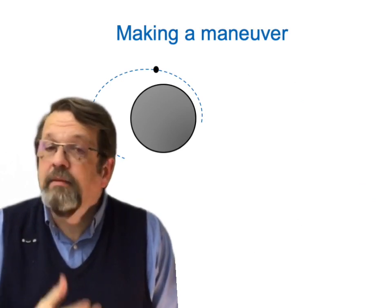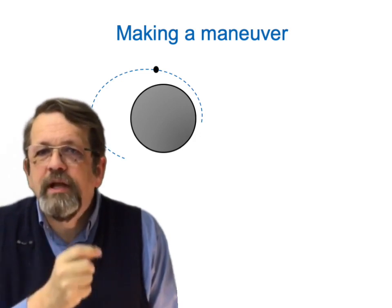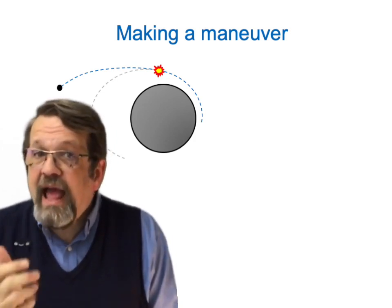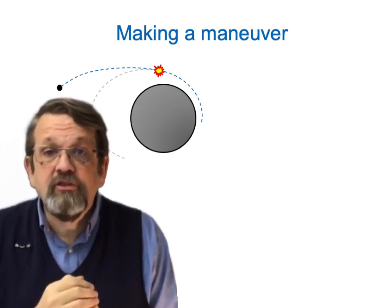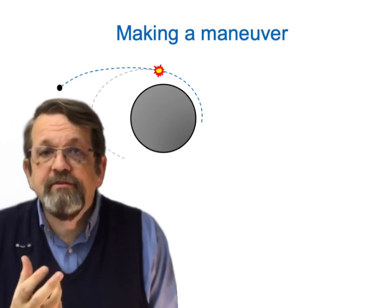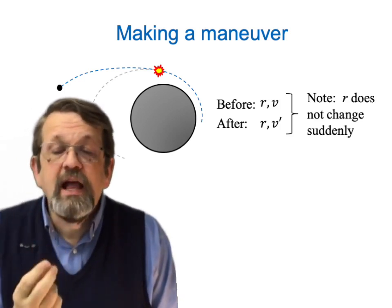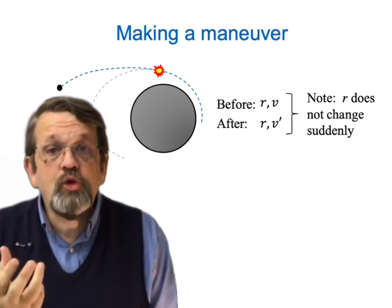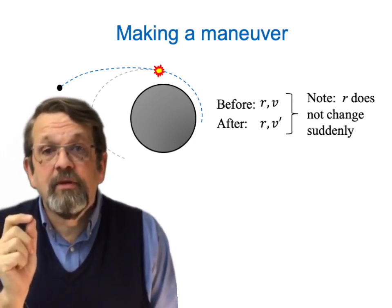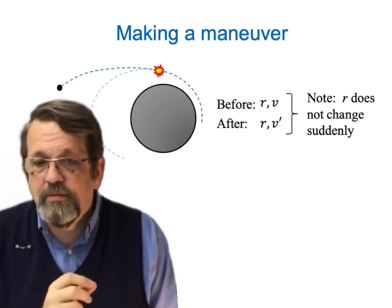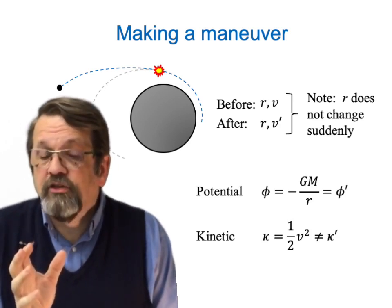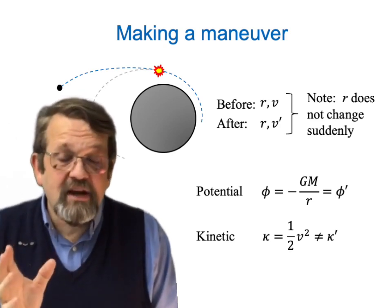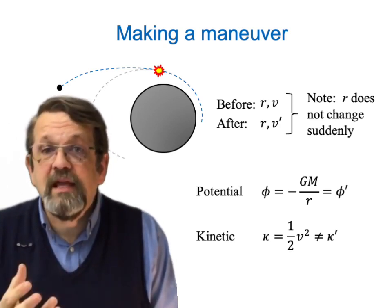So what do we mean by making an orbital maneuver? We have a satellite in an initial orbit about a planet, and at some point we fire the rocket motors, changing the satellite's velocity, after which it proceeds along a new trajectory. Before the maneuver, the satellite has distance R from the planet and speed V. After the maneuver, R is the same but the speed is now V'. The potential energy — minus GM over R — is unchanged before and after, but the kinetic energy is different because the speed has changed.